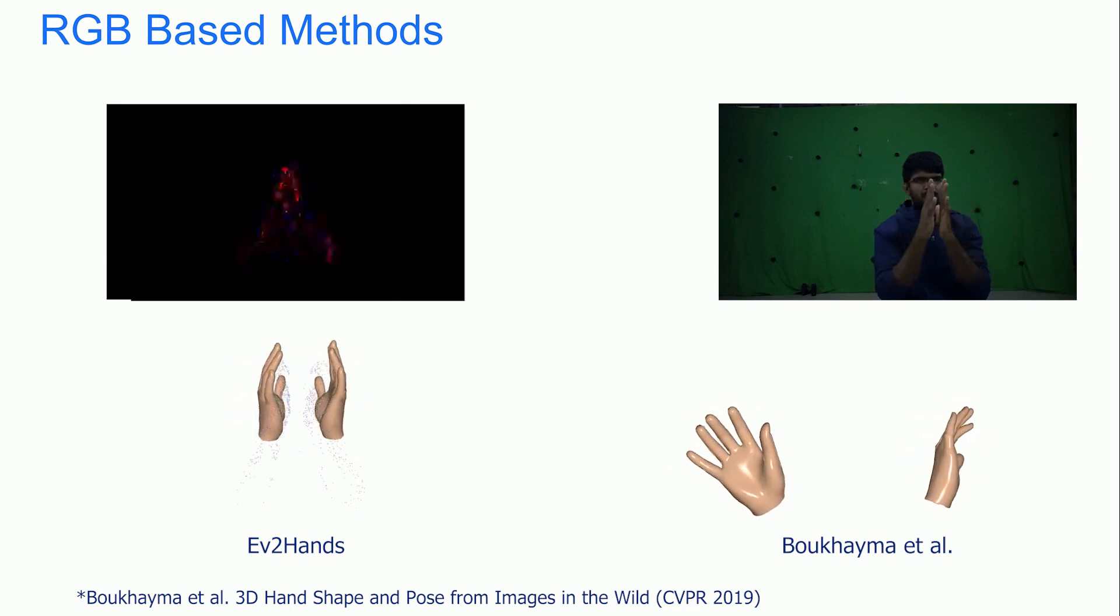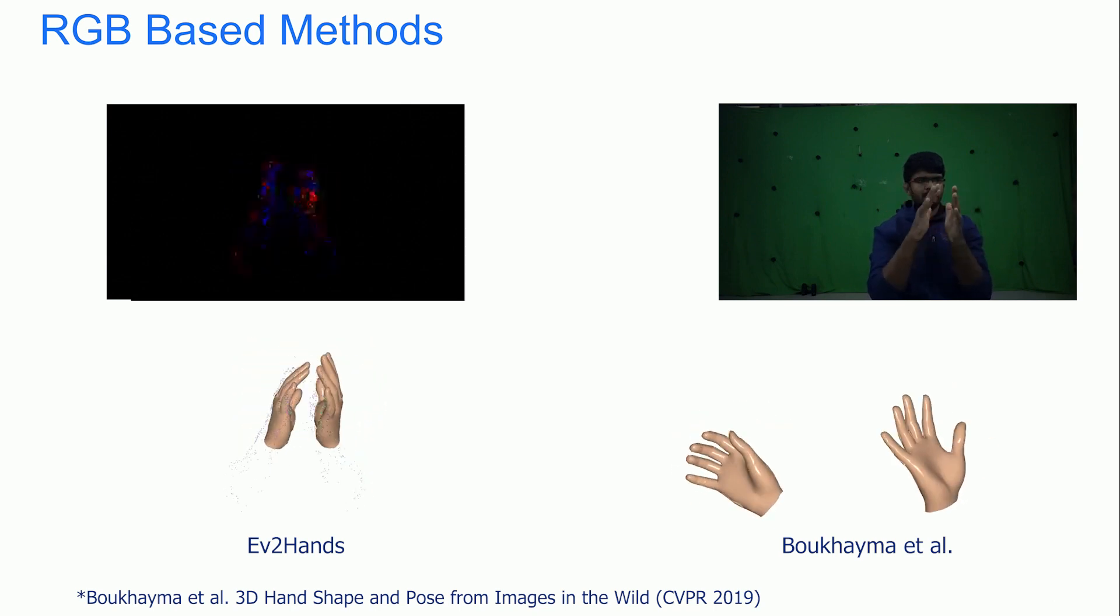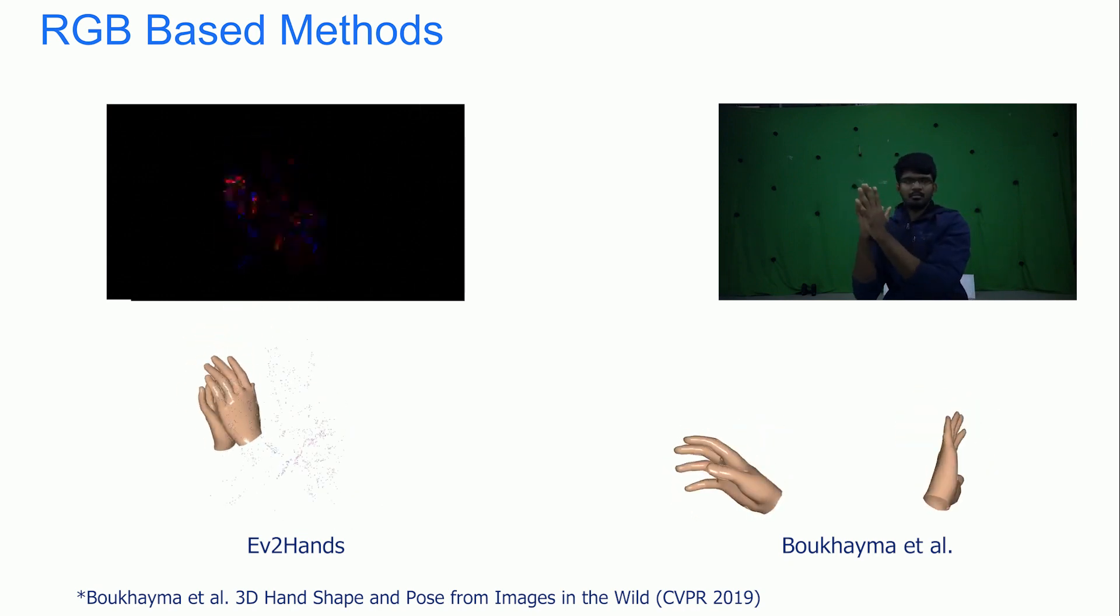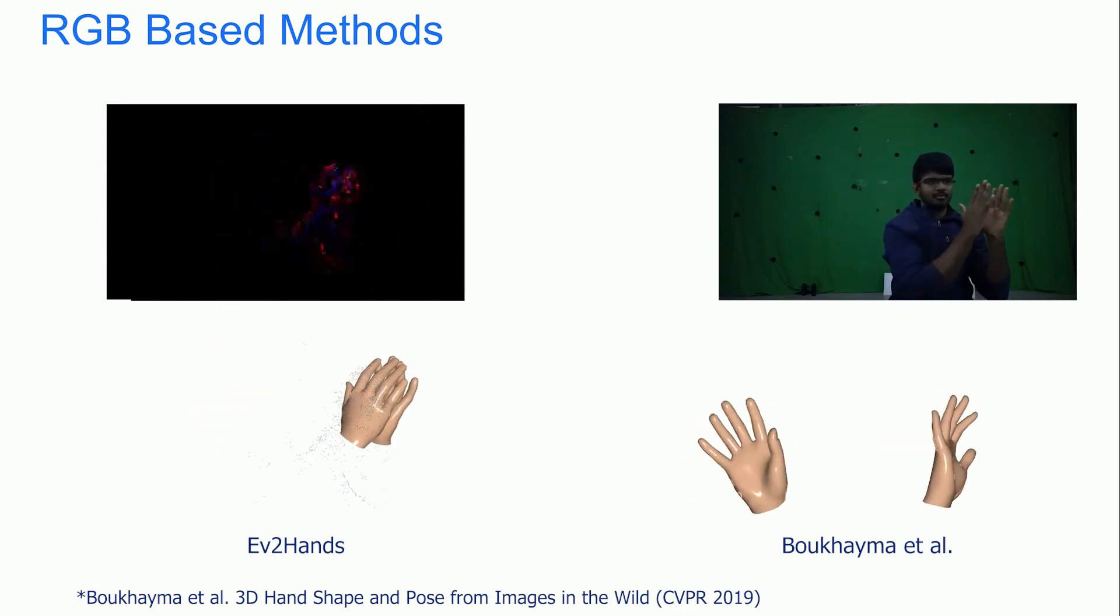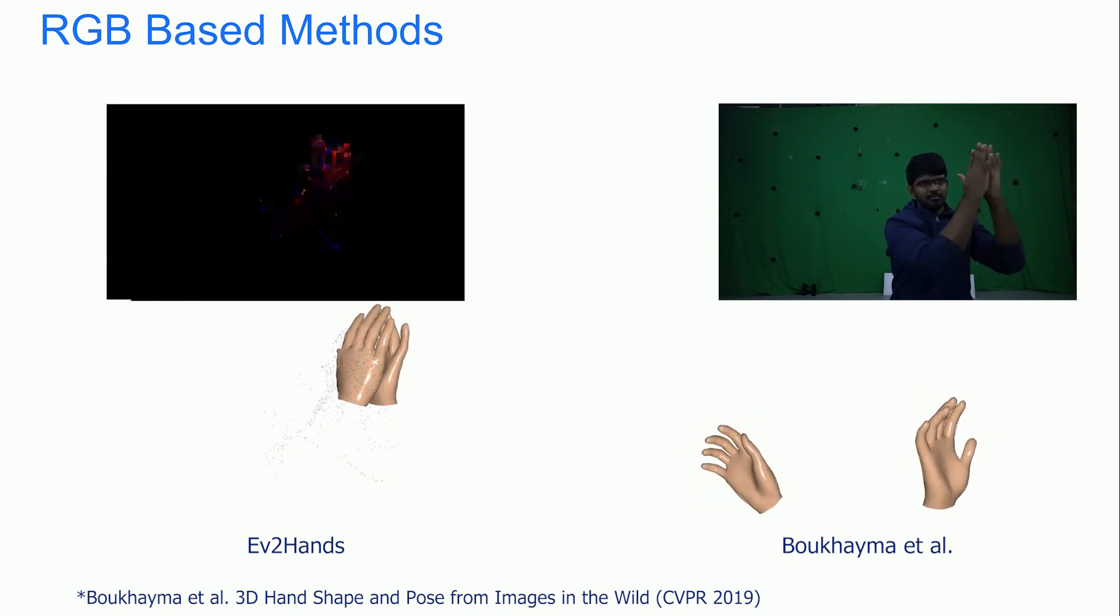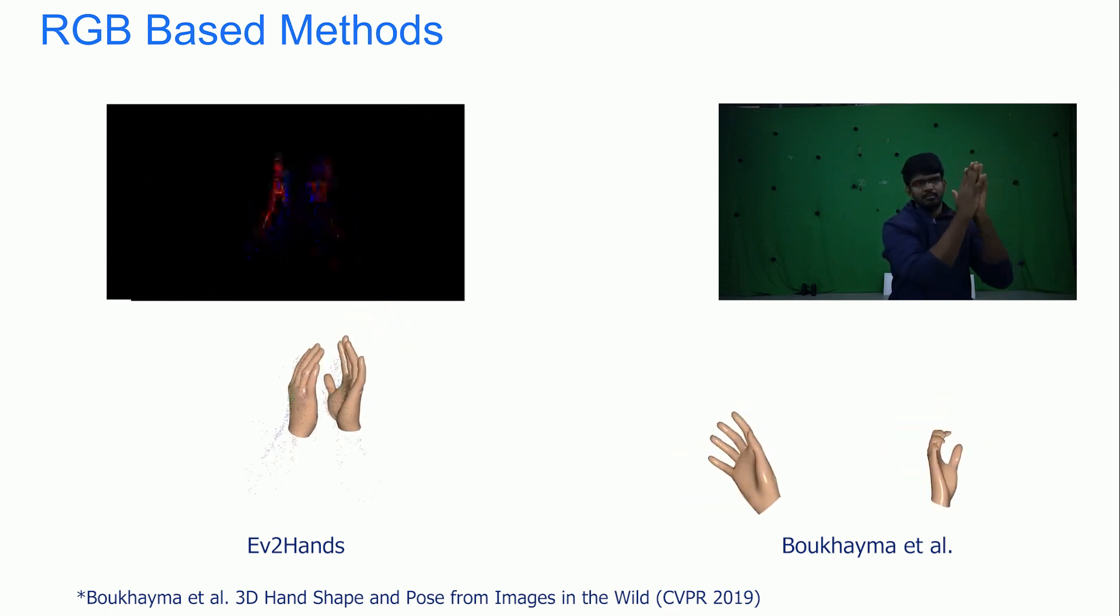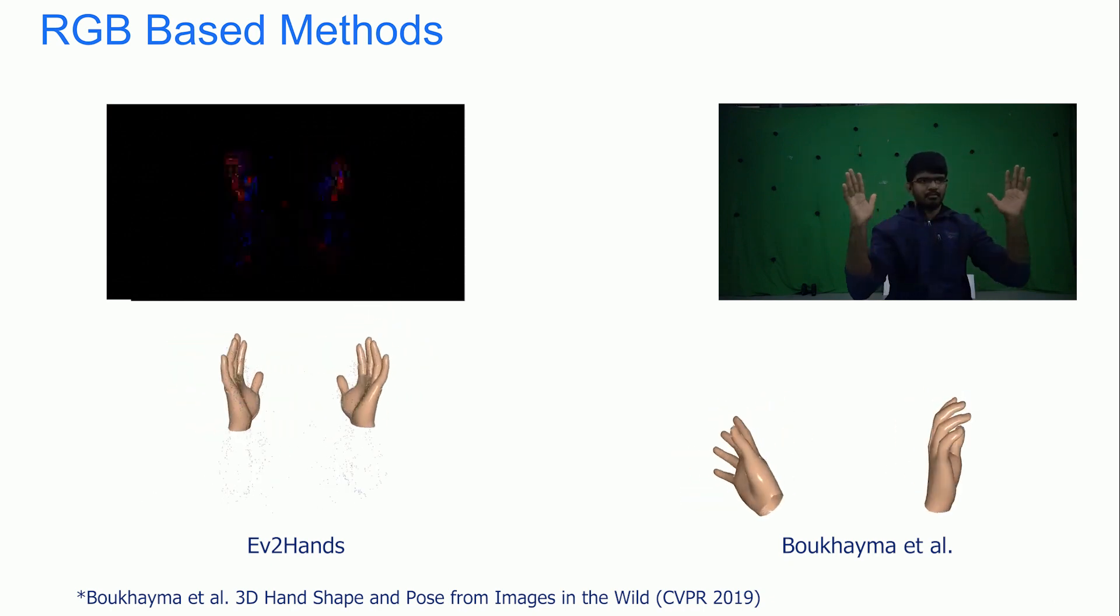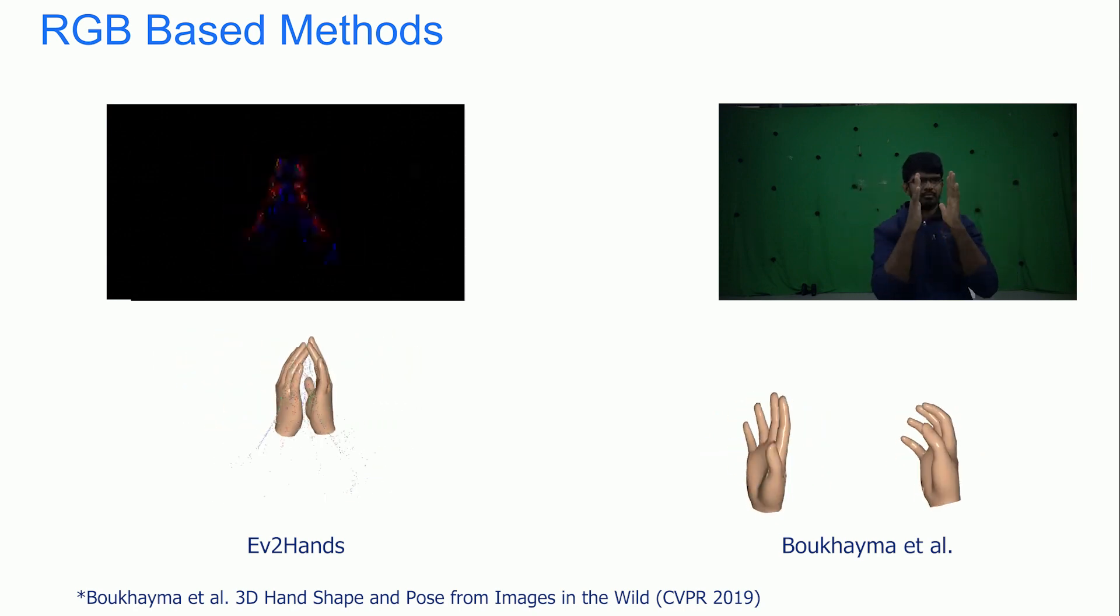We also compare our method to Boukhayma et al., a monocular RGB-based method for 3D reconstruction of a single hand, where each hand is individually cropped and predicted. Note that our method is able to recover the global translation of the hands, since it takes complete event frames as input, while the RGB methods require crops of hands.